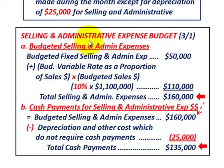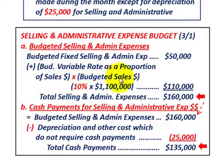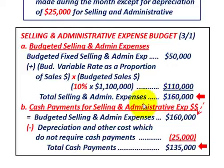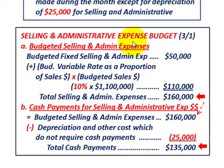That's the basics for setting up your selling and administrative expense budget. Remember: you'll have a fixed portion of expense and a variable portion, where the variable portion is typically based on a percentage of total budgeted sales. Add the fixed and variable portions together to get total selling and administrative expenses, then subtract any non-cash expenses to arrive at total cash payments. You may want to apply a similar budgeting approach for other non-manufacturing departments like engineering, purchasing, and marketing.